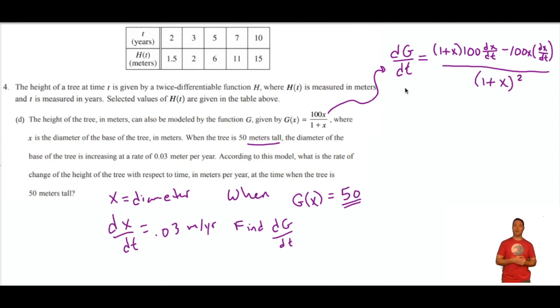Now what am I going to do? G of x is 50. Let's see. X is the diameter. Dx dt is 0.03. I have that. Oh, so I've got to set g of x equal to 50 to find out what x equals at that time. So here's an equation I can solve. I'm going to cross multiply and distribute. 50 plus 50x equals 100x. Let's see. Subtract 50x over to the other side. And I'm going to divide. I get x equals 1. What an easy number to plug in. Only thing easier would be 0.